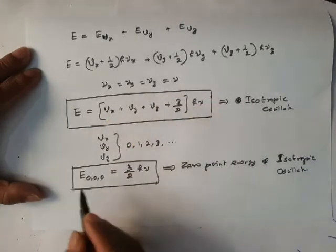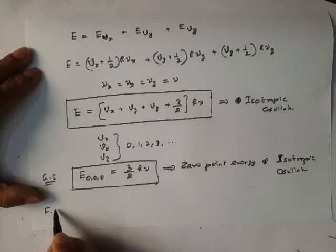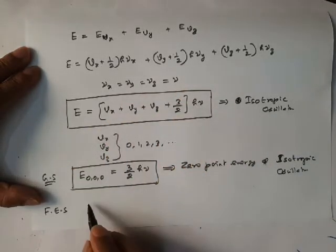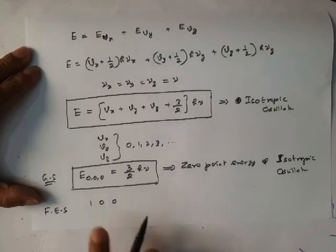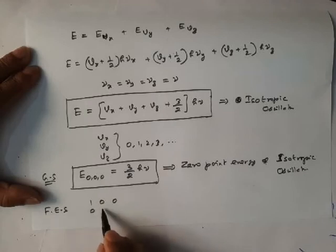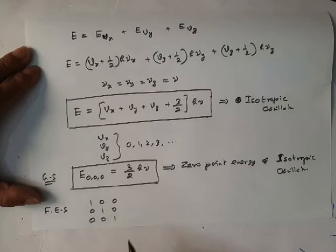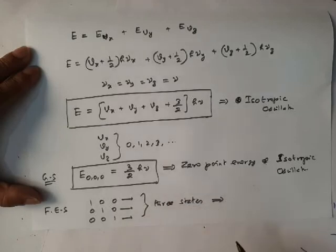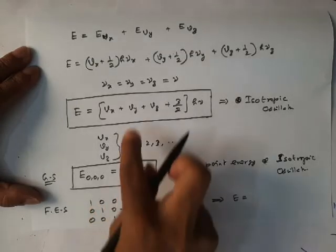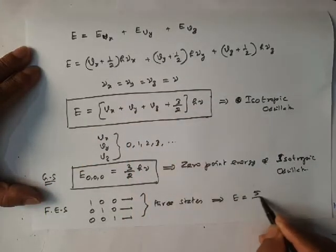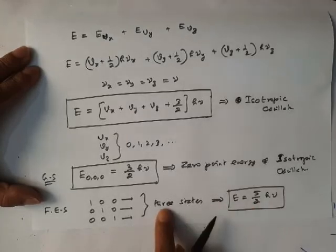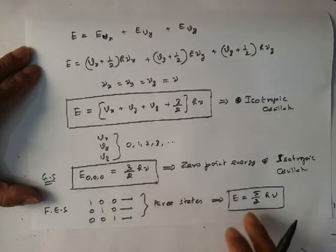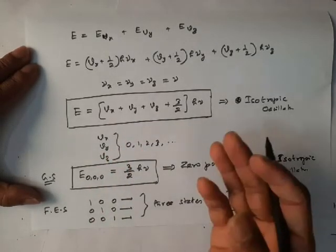This is the ground state. If you go to the first excited state, take any one of the quantum numbers as 1 and keep the other two as 0. If I take (vx=1, vy=0, vz=0), or (0,1,0), or (0,0,1), each gives one state — so you will get three states, but they have the same energy. The energy for any of these combinations (1,0,0), (0,1,0), or (0,0,1) is 5/2 hν. For this energy level we have three degenerate states.